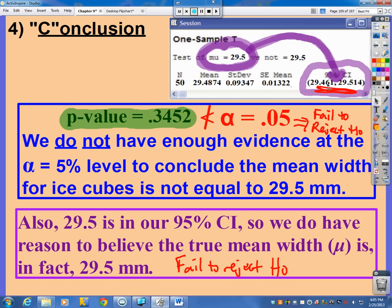Now, if 29.5 was not in our confidence interval, then we would want to go with the alternate hypothesis, which says it is not equal to 29.5. So we would reject the null hypothesis in that case and go with the alternate. But again, that was only if 29.5 was not in our confidence interval, but it is. So we fail to reject.